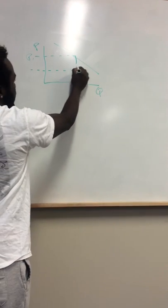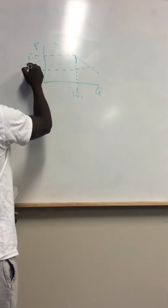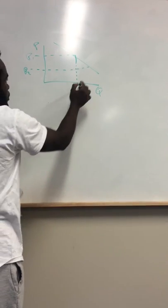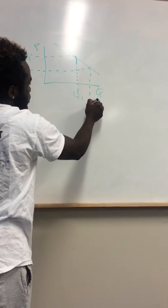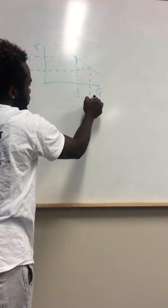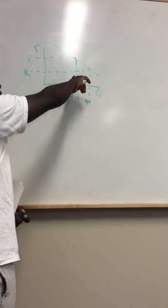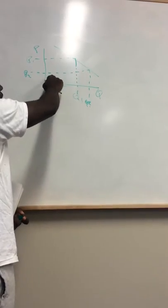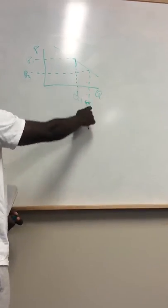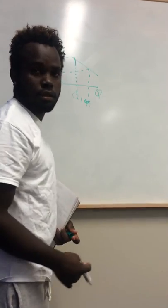So to better understand this, if I draw price two. So price two is coming right here. And so as you can see, as price decreases, the quantity increases.